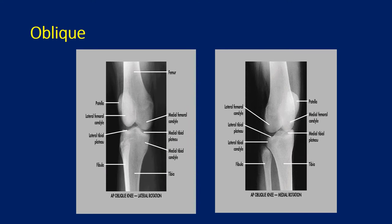Oblique views of the knee are probably the least useful view. They are taken when there is lateral or medial rotation of the knee. When there is medial rotation, you can see the proximal tibia-fibula joint very well. And when there is lateral rotation, you can see the medial compartment well.